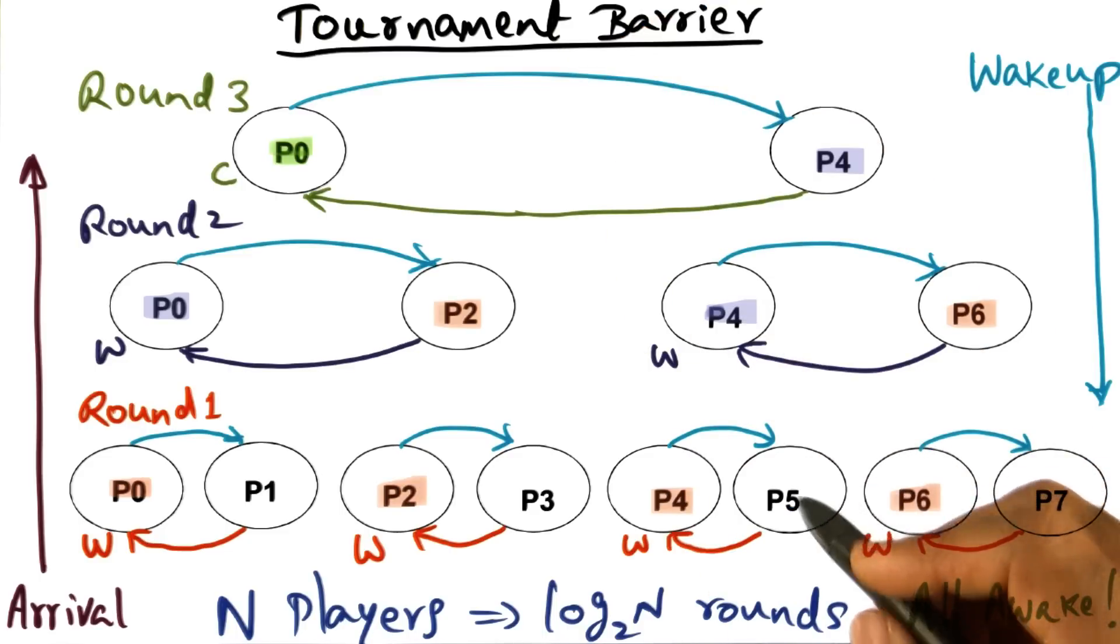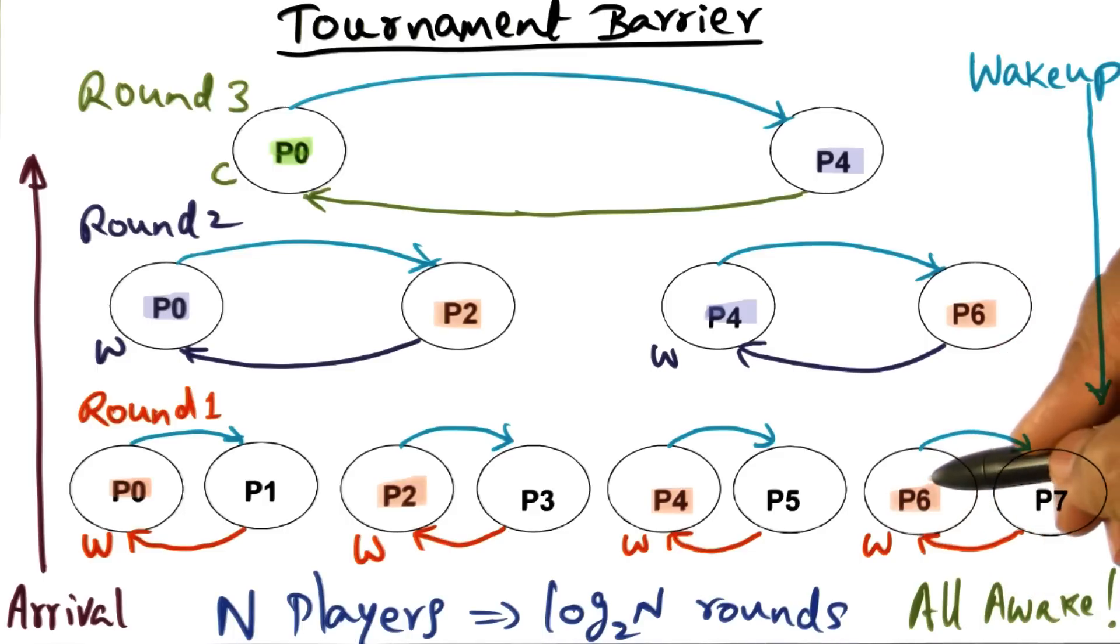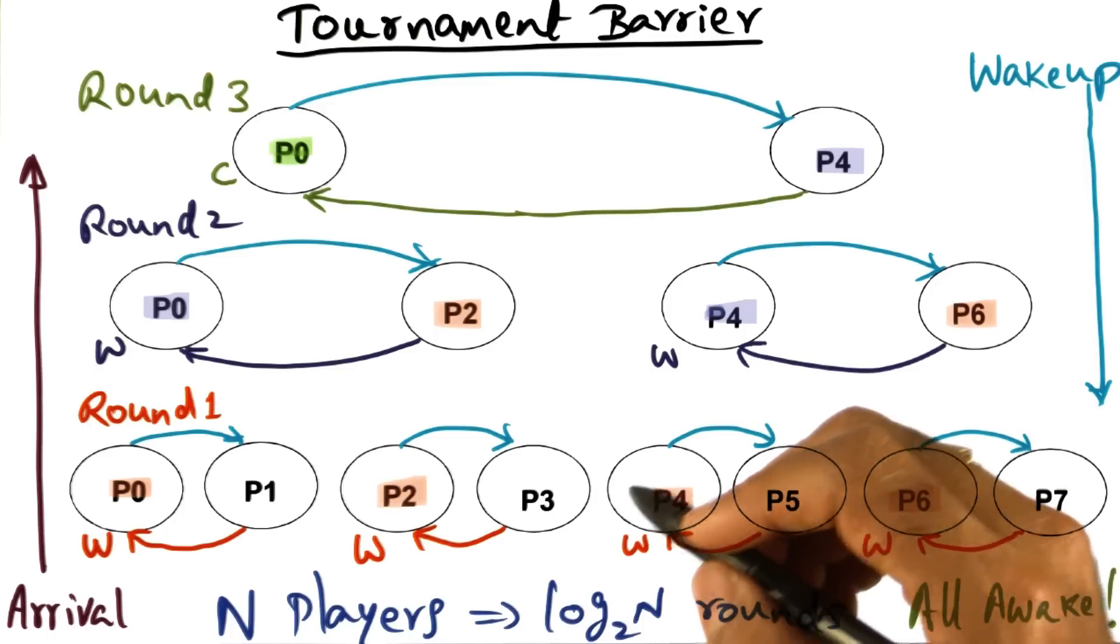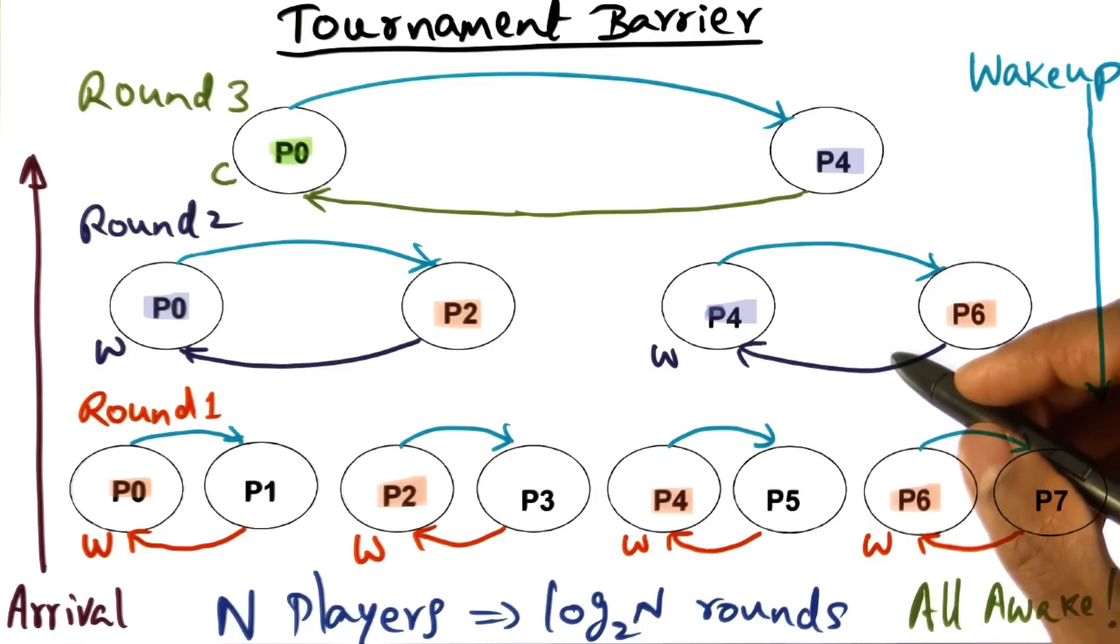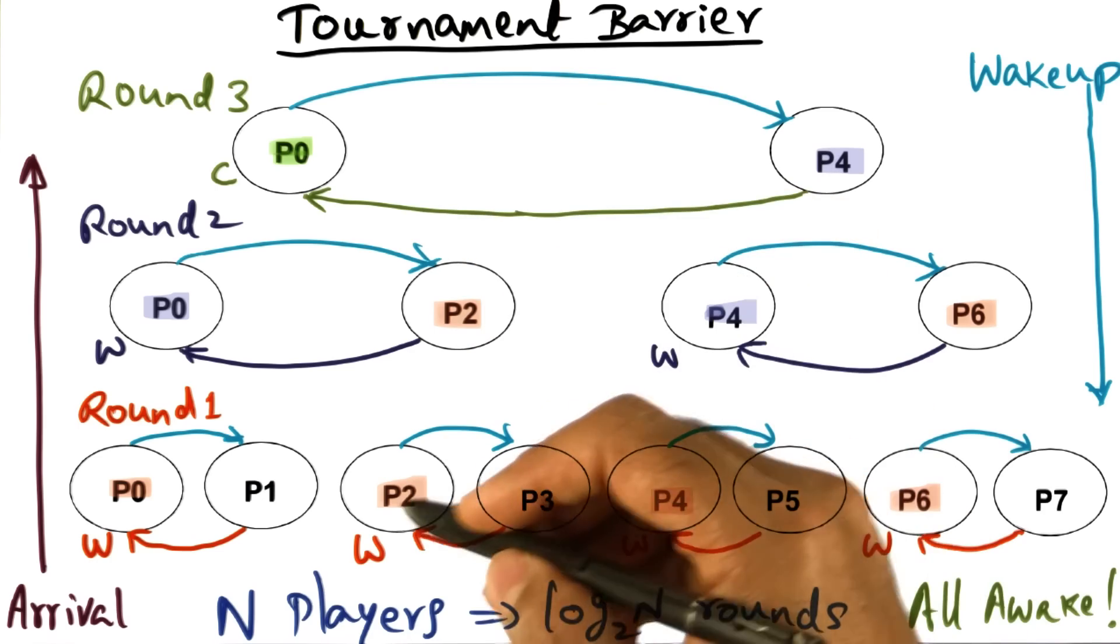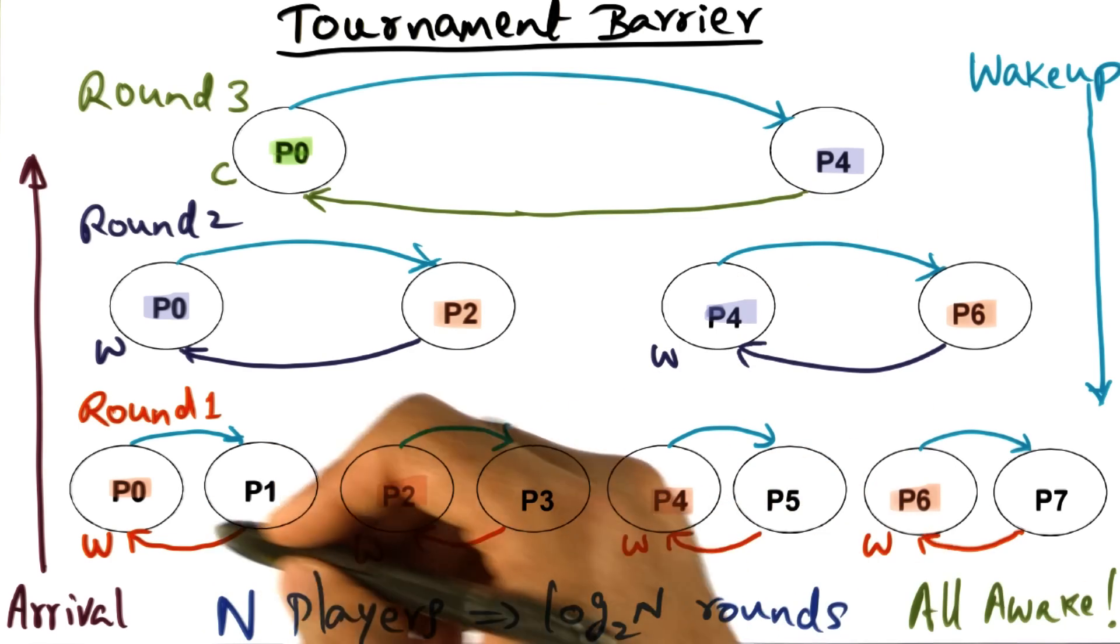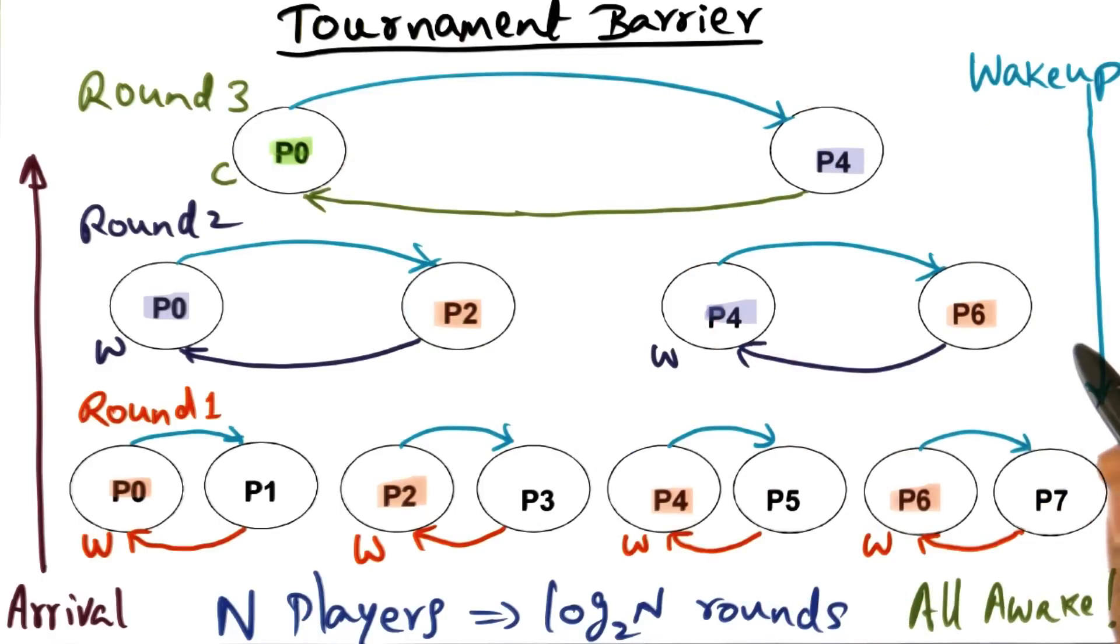The main difference is that in the tournament barrier, the spin locations are statically determined, whereas in the tree barrier, the spin location is dynamically determined, based on who arrives at a particular node in the tree. What that means in the tournament barrier is that we can statically assign the spin location for the processes at every round of the tournament.